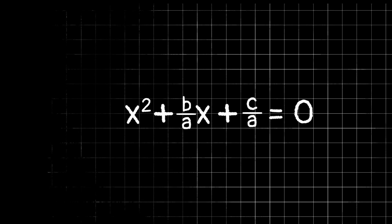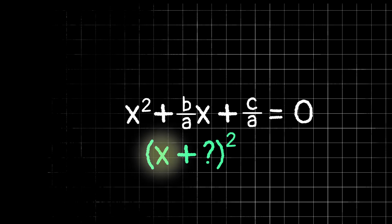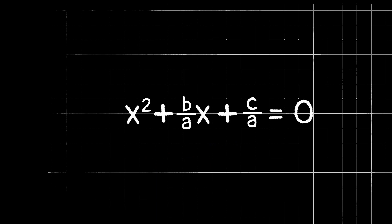It would be really cool if we could rewrite this side of the equation to look like x plus something quantity squared. Now, the reason that would be really cool is because then we would only have one x in our equation. We could take the square root of both sides, subtract out what we were adding to x, and get x all by itself. But how can we do that when we don't know if this is a perfect square? Well, let's make one.